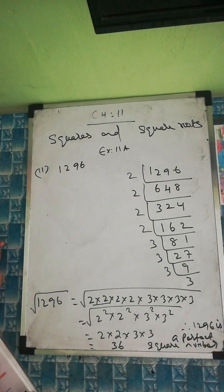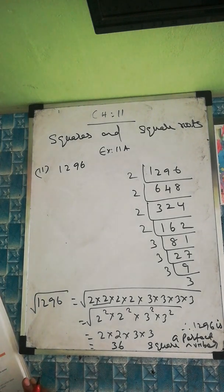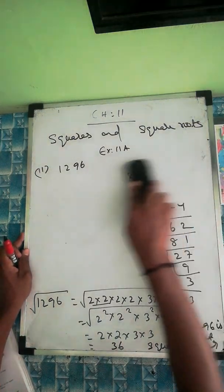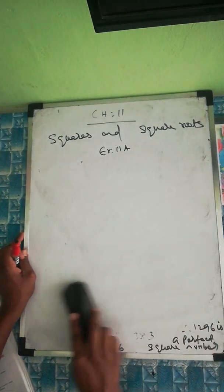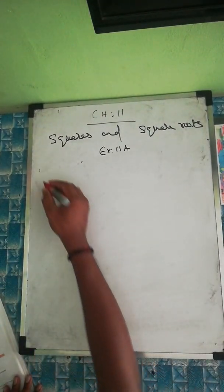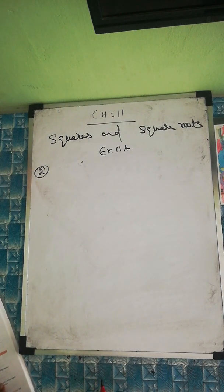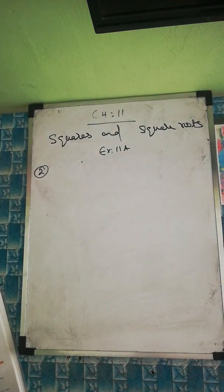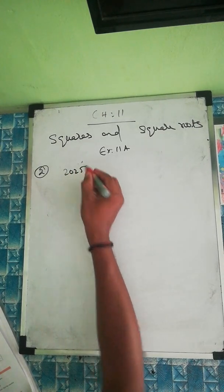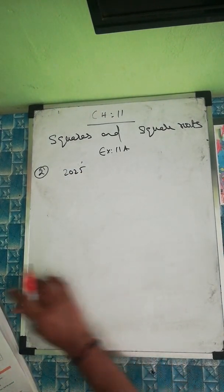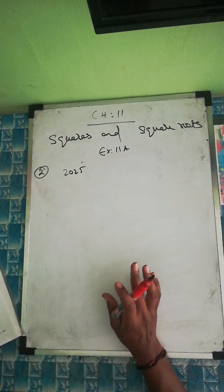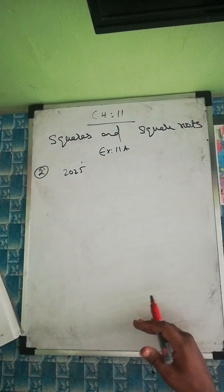You can try the remaining questions yourself. Now question number 2 of the exercise: show that each of the following numbers is a perfect square, and in each case find the number whose square is given. It uses the same method — we're now also finding the actual square root value.